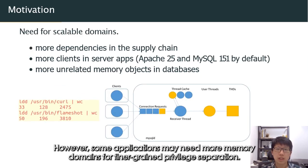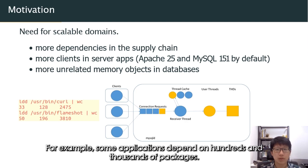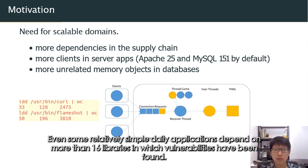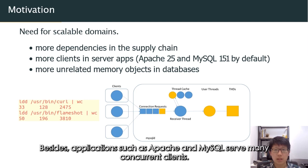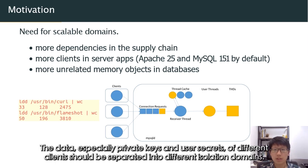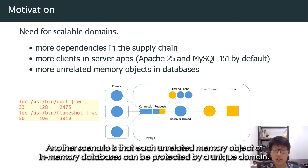However, some applications may need more memory domains for finer-grained privilege separation. For example, some applications depend on hundreds and thousands of packages. Even some relatively simple daily applications depend on more than 16 libraries in which vulnerabilities have been found. Besides, applications like Apache and MySQL serve many concurrent clients. The data, especially private keys and user secrets of different clients, should be separated into different isolation domains. Another scenario is that each unrelated memory object of in-memory databases can be protected by a unique domain.